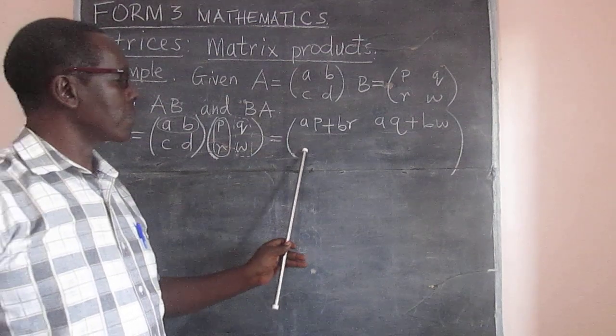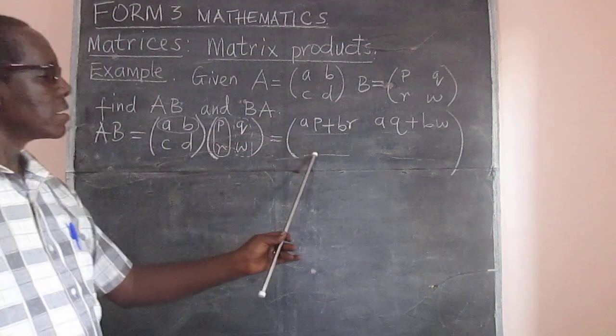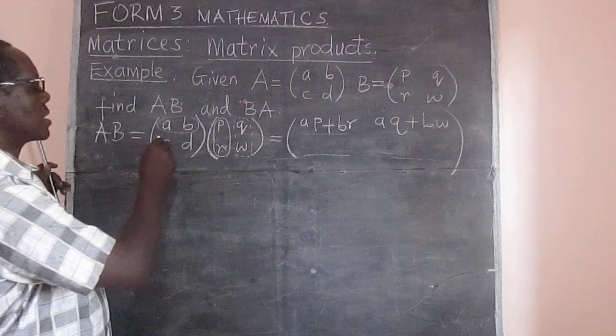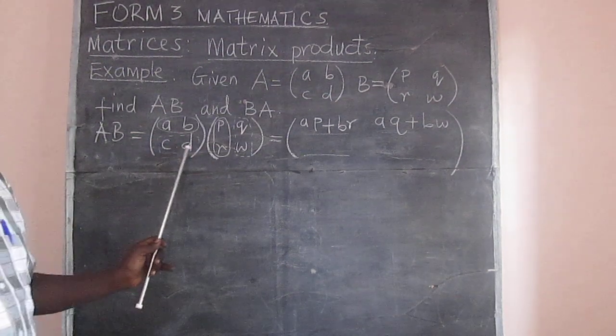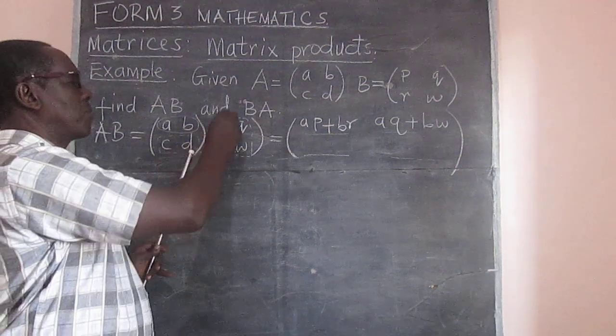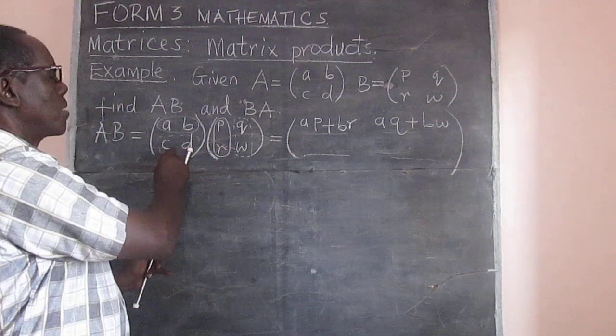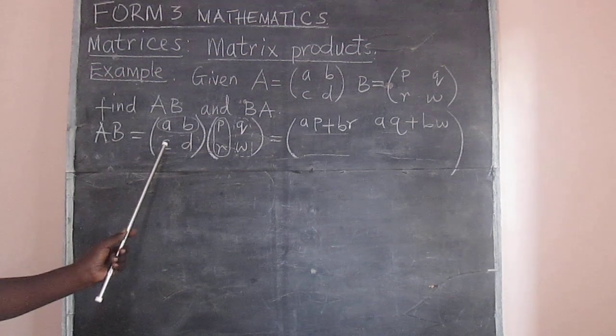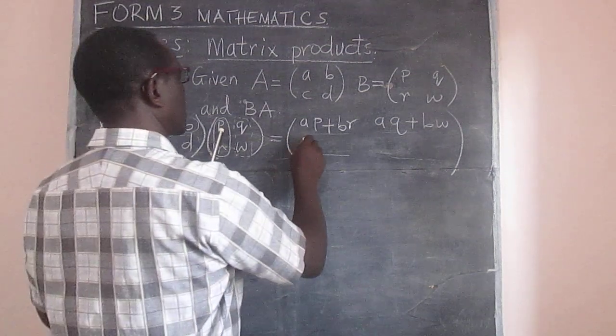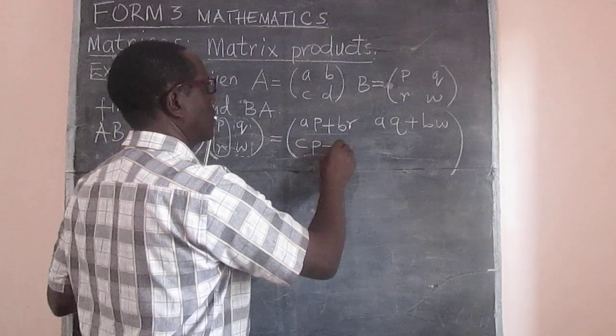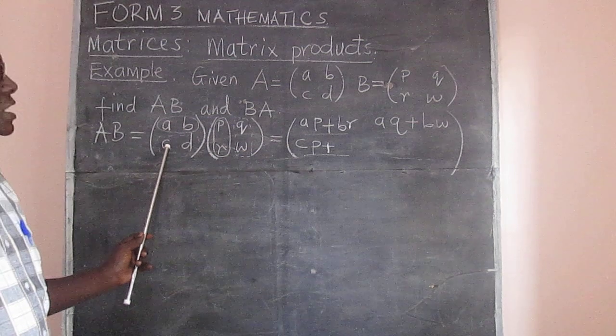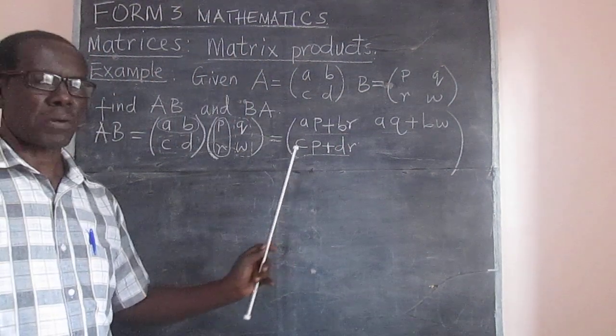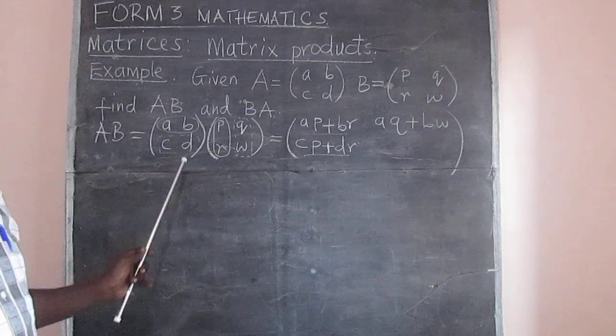So we are through with the elements in the first row in the product. And now we need to get the element here and the element here. So how do we get the first row in the second column? And that means we will have to go now to our second row. And the elements in the second row are C and D. And like we did in the other case, we will take C and D and multiply by PR to get this one. And then the same C and D multiplied by Q and W to get this element here. So let's do the first one. C times P, that will give us CP plus, that was C times P and now we go D times R, that gives us DR.